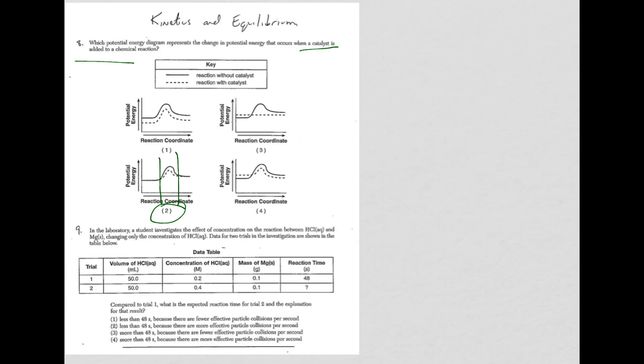Well, the volume of HCl didn't change. However, we doubled the concentration of HCl and magnesium didn't change. Well, I would think we'd expect that if the concentration is higher for trial two, reaction time should go down. That there's more HCl around, so you'll have more effective collisions, and therefore the reaction will run less than 48 seconds.